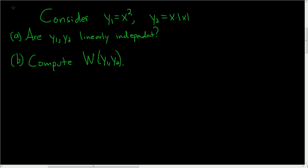In this video, we're going to look at two functions that are linearly independent but whose Wronskian is 0. So we have two functions: y1 is x squared, and y2 is x times the absolute value of x. Part A is asking if they're linearly independent, and part B is asking us to compute the Wronskian.